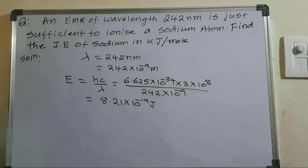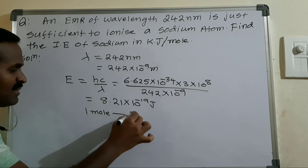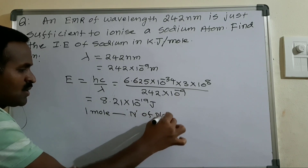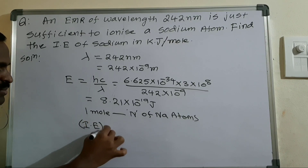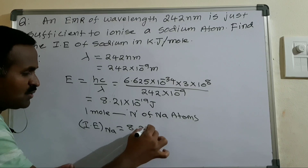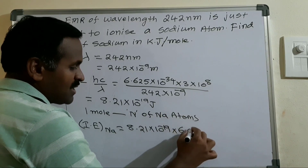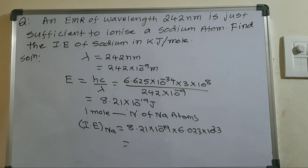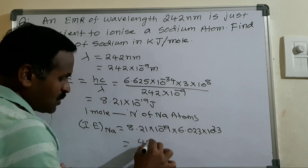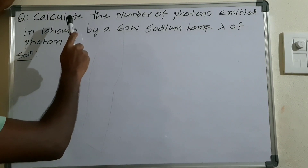For the ionization energy per mole, we multiply by Avogadro's number, since one mole contains Avogadro's number of sodium atoms. So ionization energy equals 8.21 into 10 power minus 19 multiplied by 6.023 into 10 power 23. After simplification you will get 494.5 kilojoules per mole.